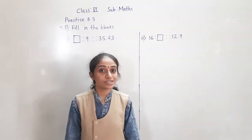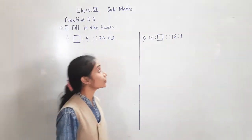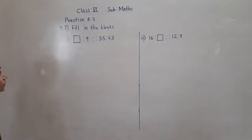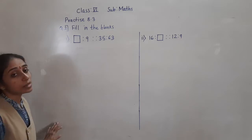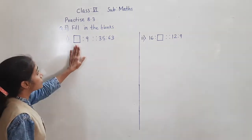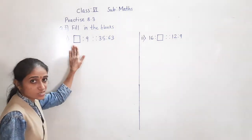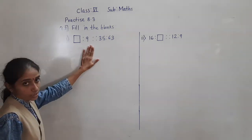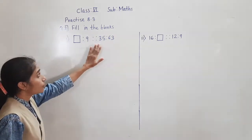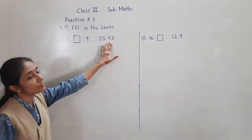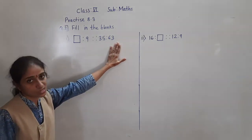Good morning students. Let's solve today Practice 8.3, question number 2 - fill in the blanks. See here, a blank box is given. It's blank to 9, proportional 35 is to 63.